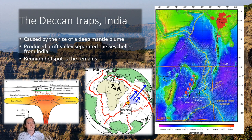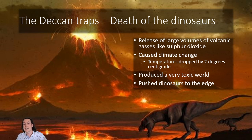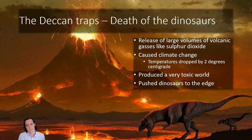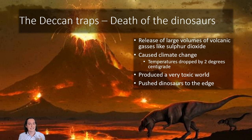Now, this formed 66 million years ago, and if you're up on your mass extinctions, something quite dramatic happened 65 million years ago — the death of the dinosaurs. There's been a lot of interest in the Deccan Traps surrounding the dinosaur extinction because they occur at roughly the same time. The Deccan Traps would have released a huge volume of volcanic gases like sulfur dioxide into the atmosphere, causing widespread climate change. It's estimated the temperature dropped by around two degrees, which is a huge amount and would have produced acid rain, changed the composition of the oceans, and essentially created a really toxic world. This would have pushed the dinosaurs and other animals right to the edge of what they could handle — but the Deccan Traps weren't the nail in the coffin for the dinosaurs.